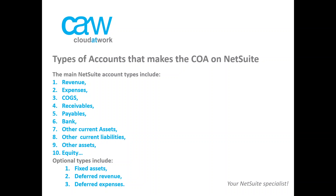There are three additional types that include fixed assets, deferred revenue, and deferred expenses. These three additional types will show only once you're using the related bundles from NetSuite, which are the fixed asset, the revenue recognition, and the expense amortization bundles.